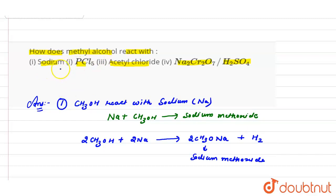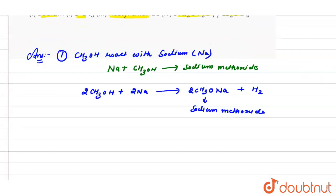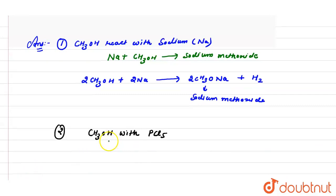Now we see the reaction with PCl₅. When CH₃OH, that is methanol, reacts with PCl₅ — phosphorus pentachloride — let's see what we get.